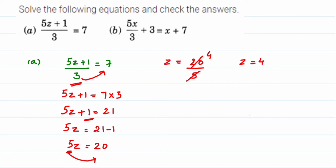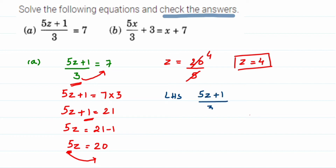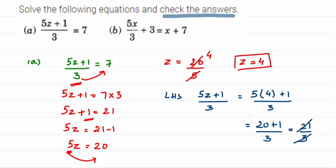The question asks us to check the answer, so we substitute z = 4 back into the equation and check if LHS and RHS are the same. Taking the LHS: (5z + 1) / 3 — substitute z = 4, so 5 × 4 + 1 upon 3. That gives 20 + 1 upon 3, which is 21 / 3 = 7. And 7 is my RHS. So LHS = RHS, confirming z = 4 is the correct answer.